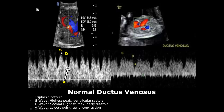The highest peak is called the S wave and it represents ventricular systole, with a sharp increase in velocity for a short amount of time. The second highest peak is the D wave, representing early diastole. The A wave is the lowest point and represents atrial contraction. The entire blood flow is in the forward direction.